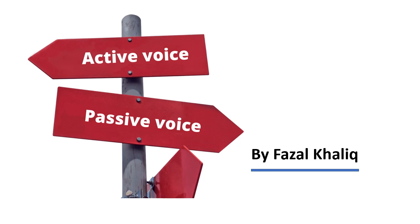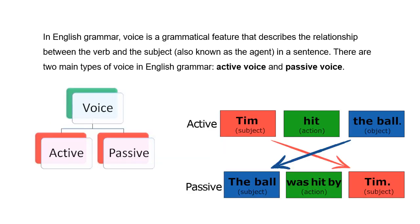Assalamu alaykum dear students. Today we will learn about active and passive voices. Keep in mind that in English grammar, voice is a grammatical feature that describes the relationship between the verb and the subject, also known as the agent in a sentence. There are two types of voice in English grammar: active voice and passive voice.